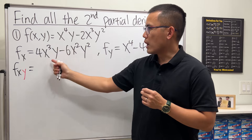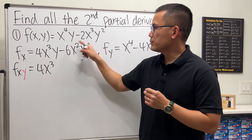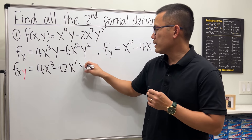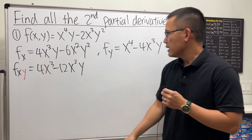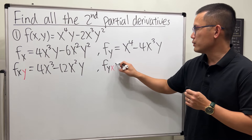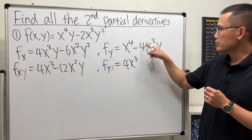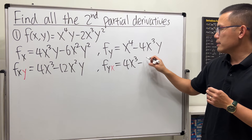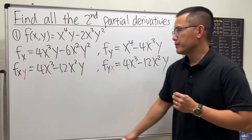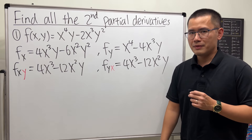For fxy: the derivative of the y term is just one, so the first part stays; for the second term, put the two to the front and y to the first power. Then for fyx, differentiate fy with respect to x: we get 4x cubed, and putting the three to the front gives minus 12x squared y. Notice fxy and fyx are the same — by Clairaut's theorem the mixed partials are equal.